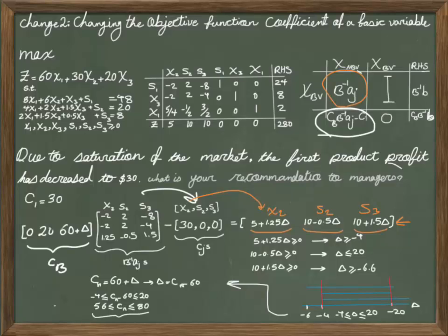But in this case, your C is equal to 30. So 30 doesn't fall within this region. Or in another sense, you can say your 60 drops to 30, so you have a negative 30 as your delta.